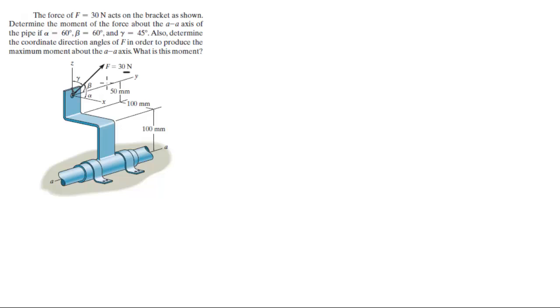Basically, you're given the Cartesian vector form of the force because you're given the direction angles. The Cartesian vector form is the force times the cosine of the angle, so you got 30 times cosine of the angle that it forms with the x in the i.